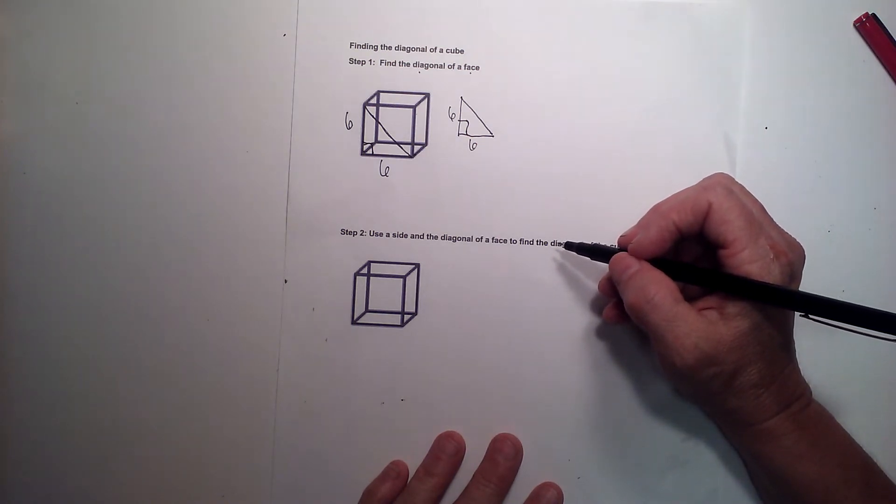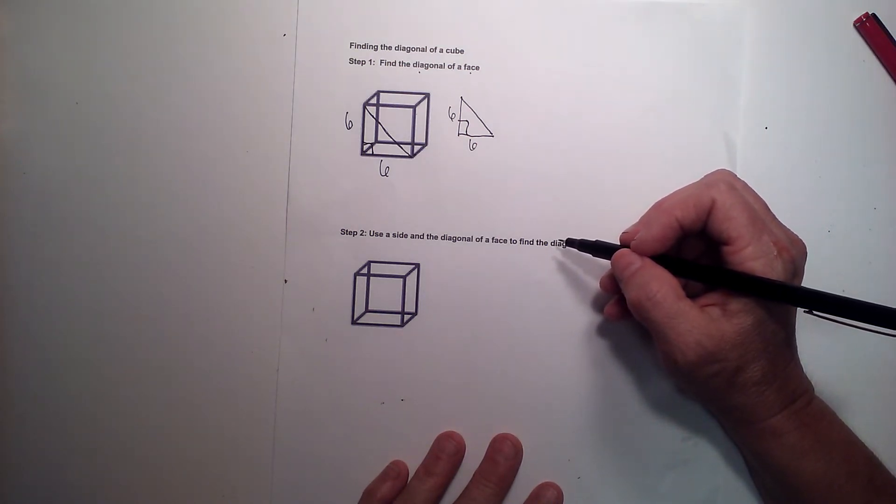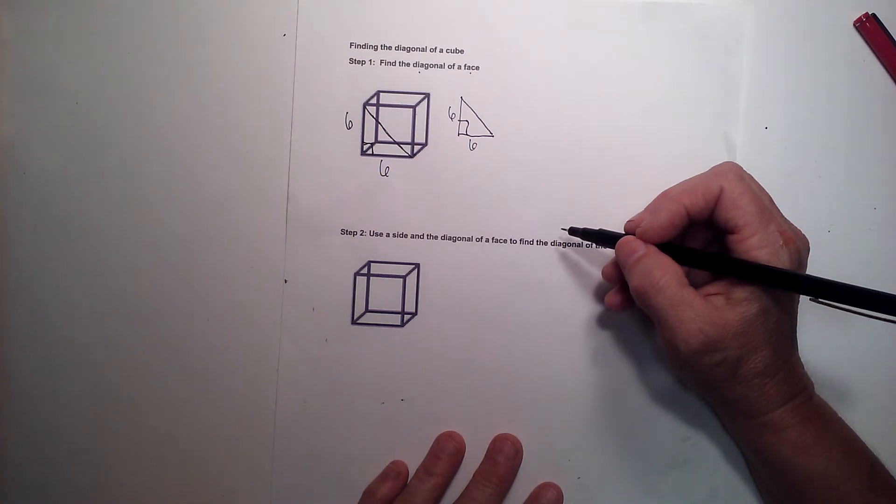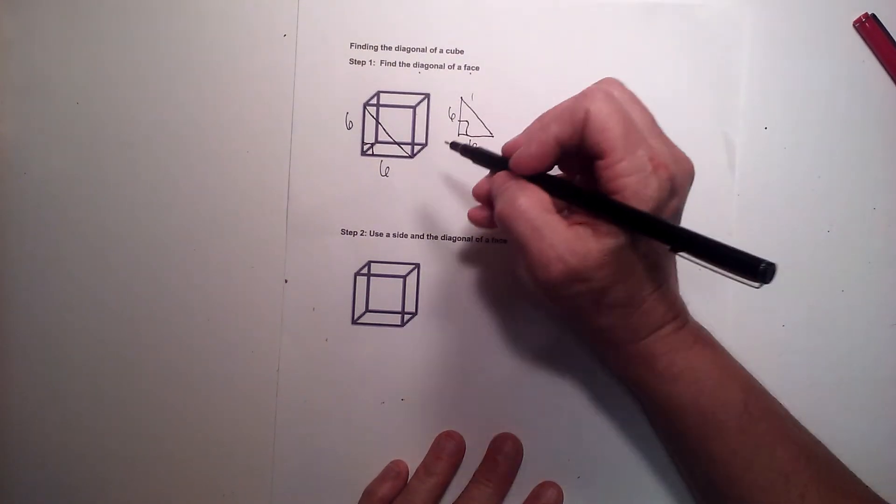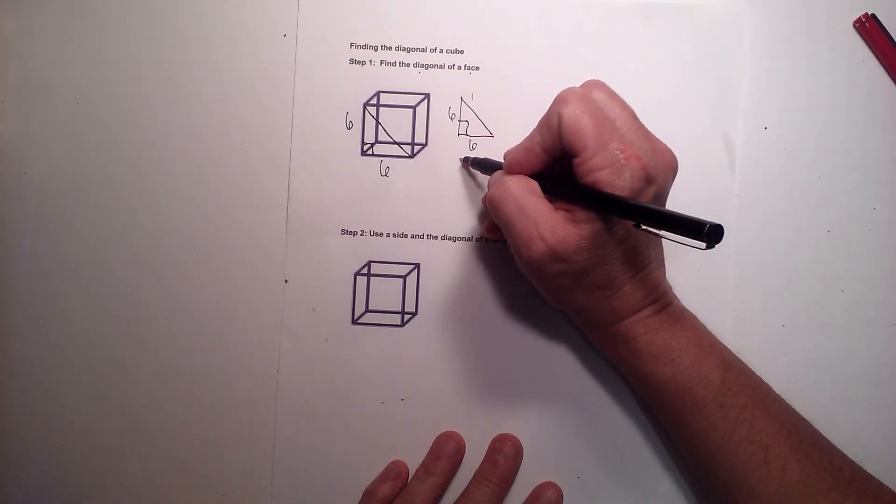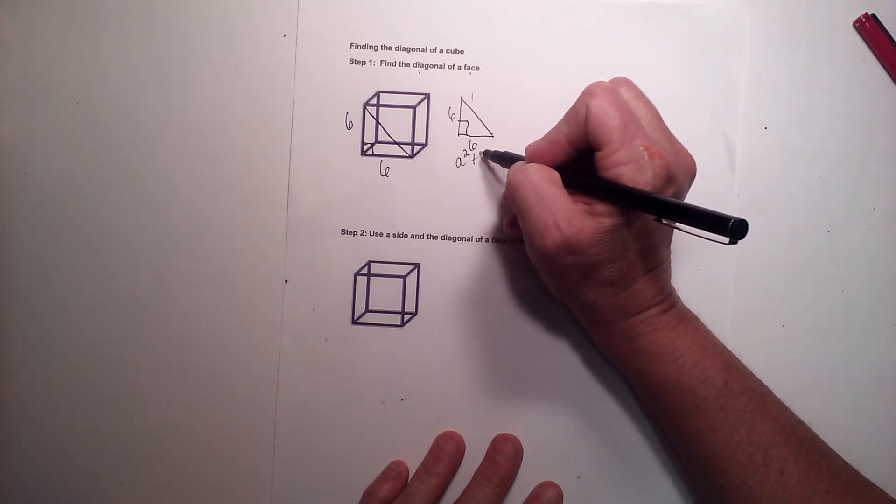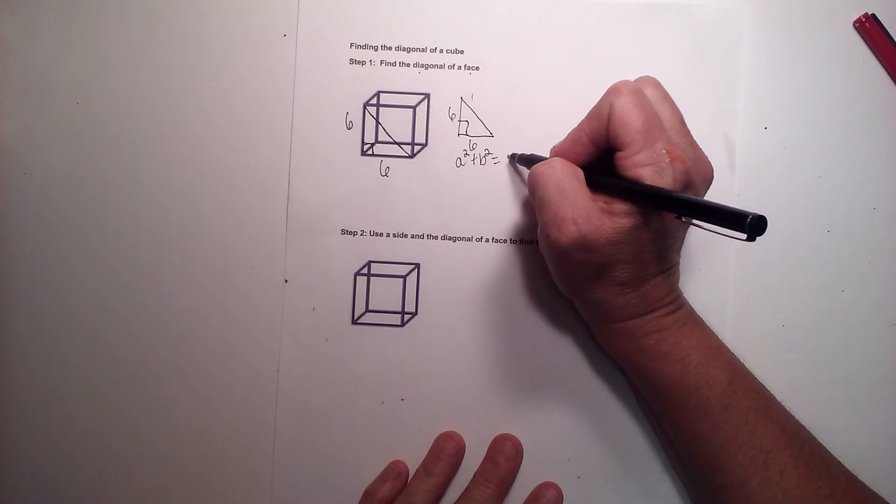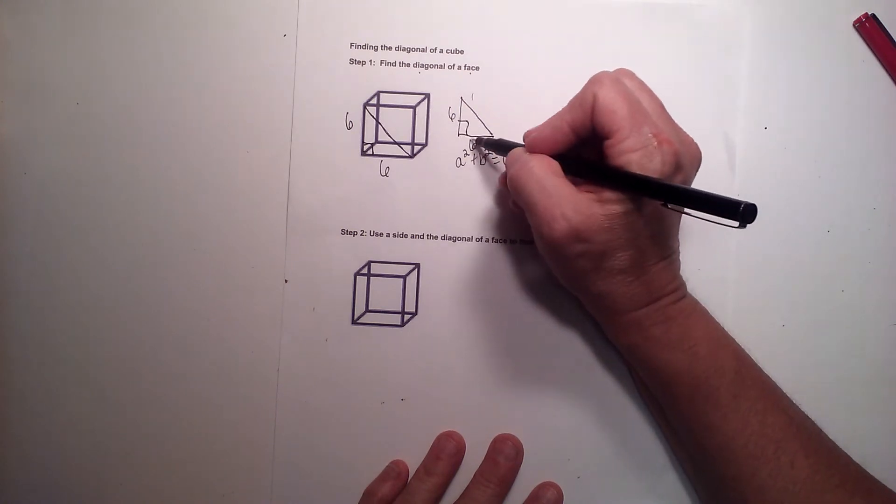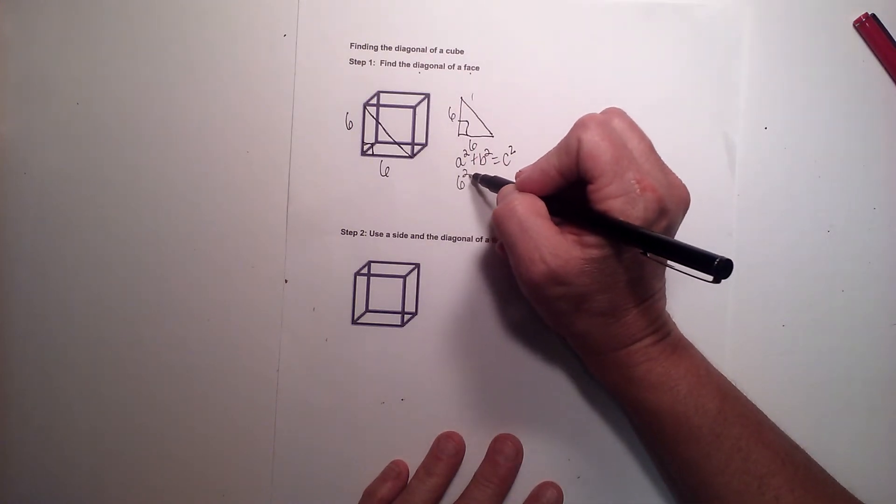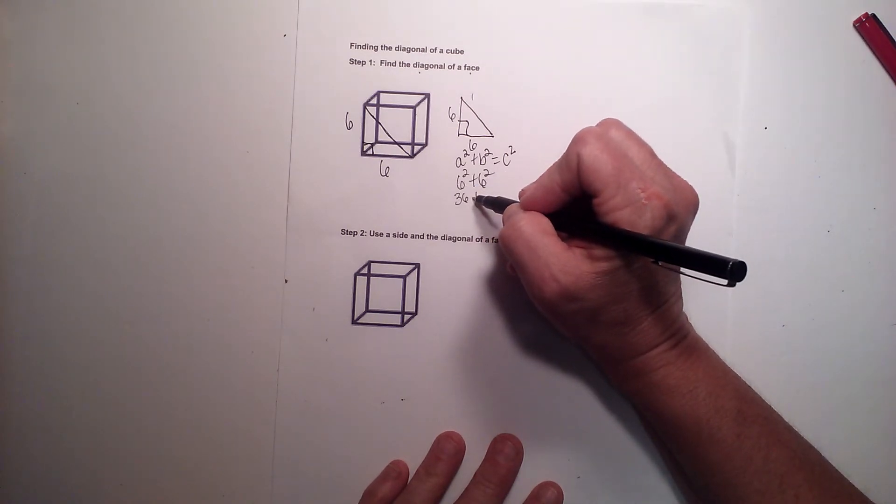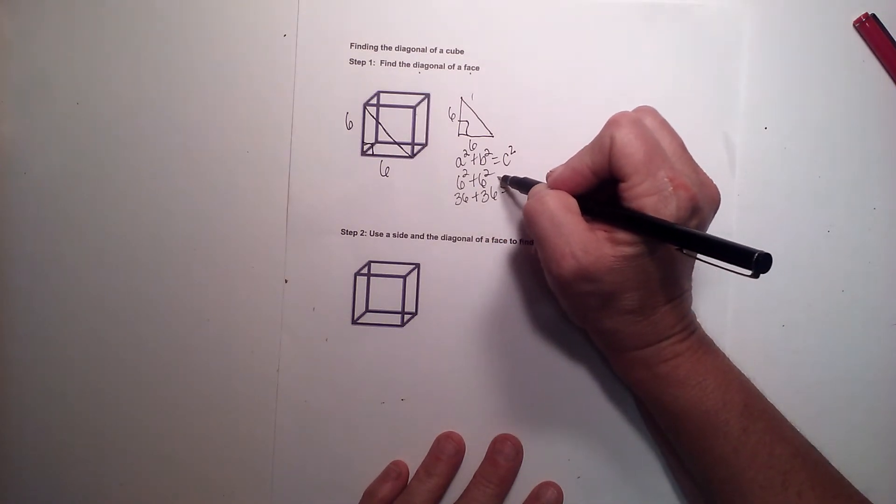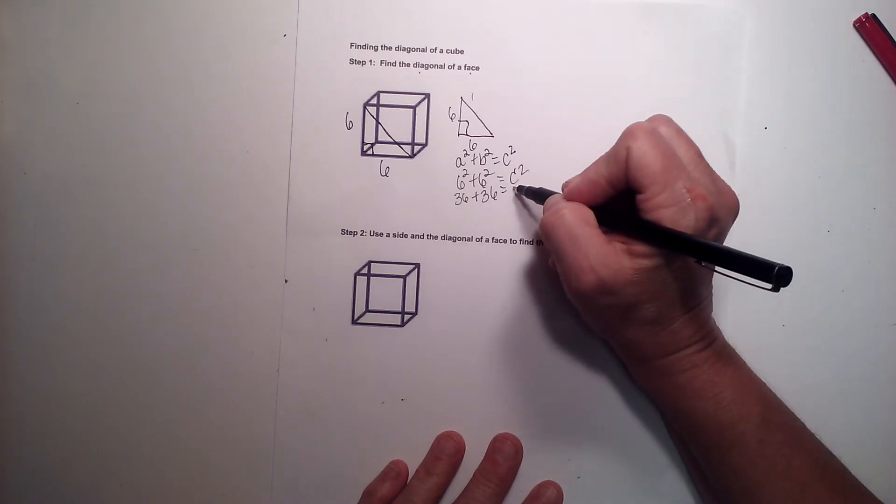Now if you know your 45-45-90 rules, you can use that to find the length of the hypotenuse, or you can use the Pythagorean theorem. A squared plus B squared is equal to C squared. So we have the two legs, which are both six, so let's plug in six. Six squared is 36 plus six squared is 36, and that is equal to 72.